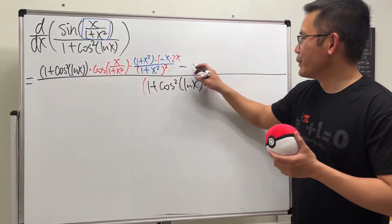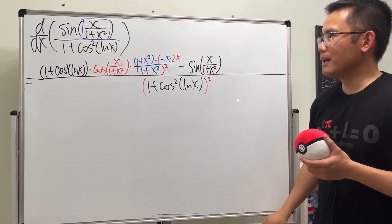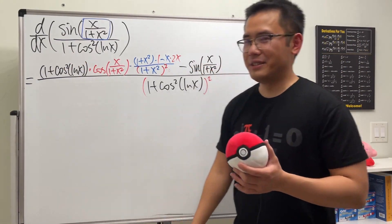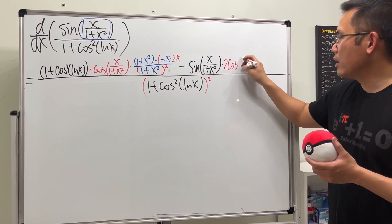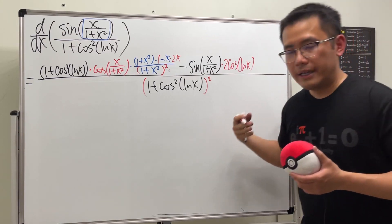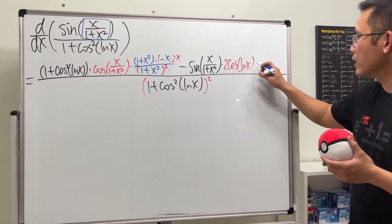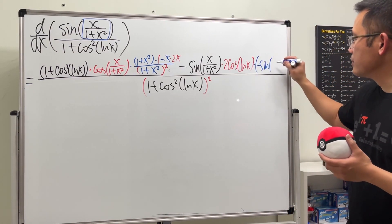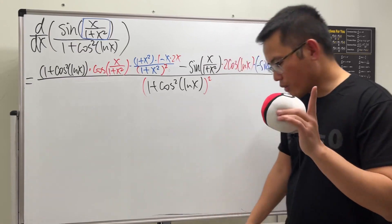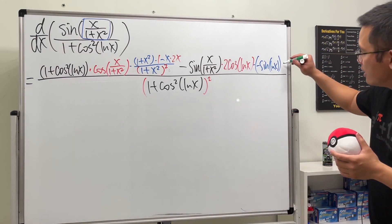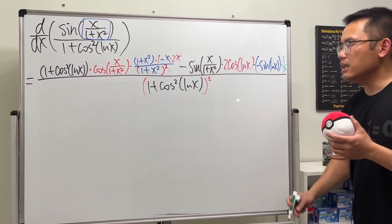Minus the top function, which is sine of (x / (1 + x²)), multiplied by the derivative of the bottom. The derivative of 1 is just zero; for the cosine² term, bring the 2 to the front, so we multiply by 2, cosine(ln x) stays, then multiply by the derivative of cosine which is negative sine — so we get negative sine — with input ln x. And don't forget to multiply by the derivative of ln x, which is 1/x.